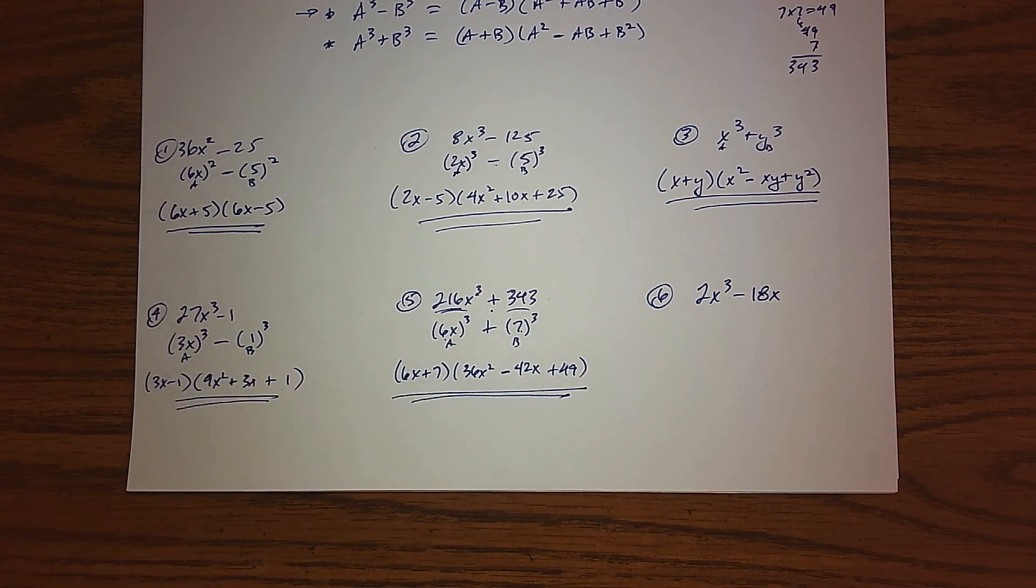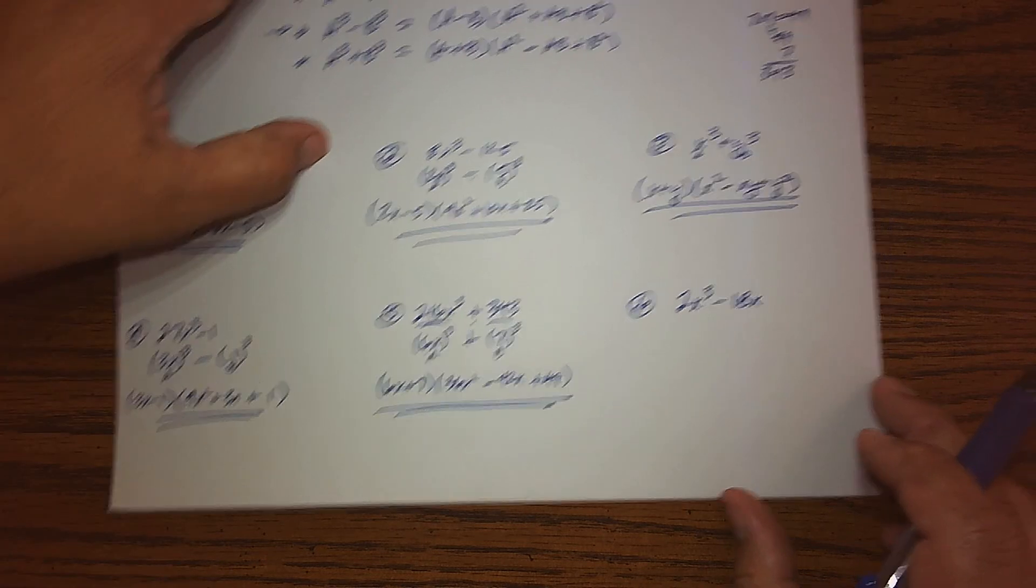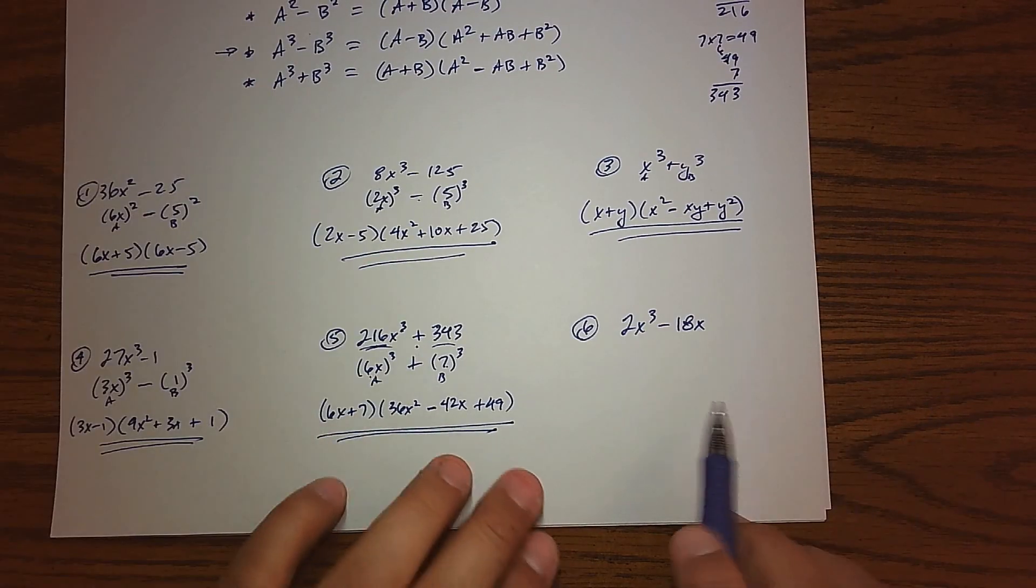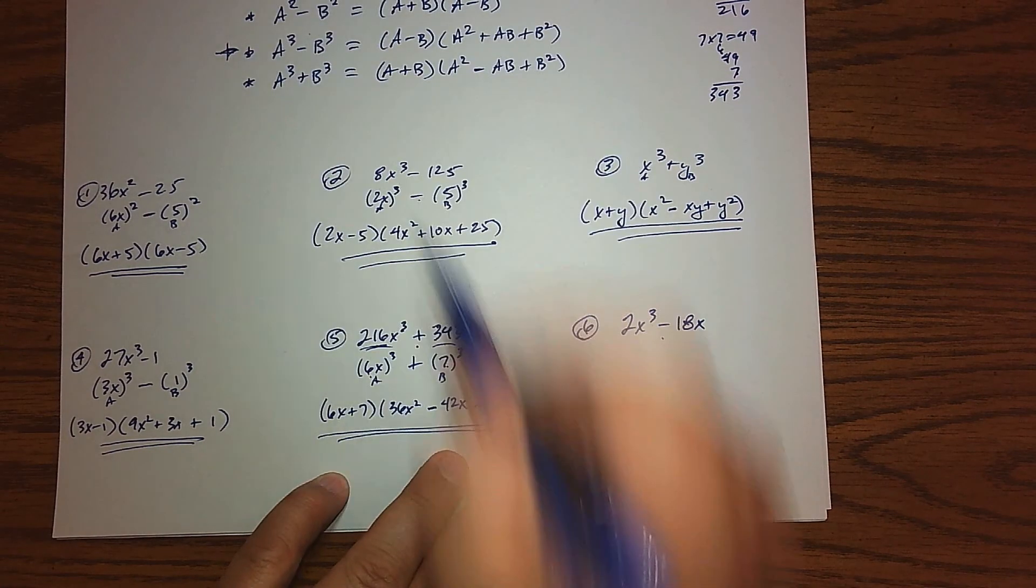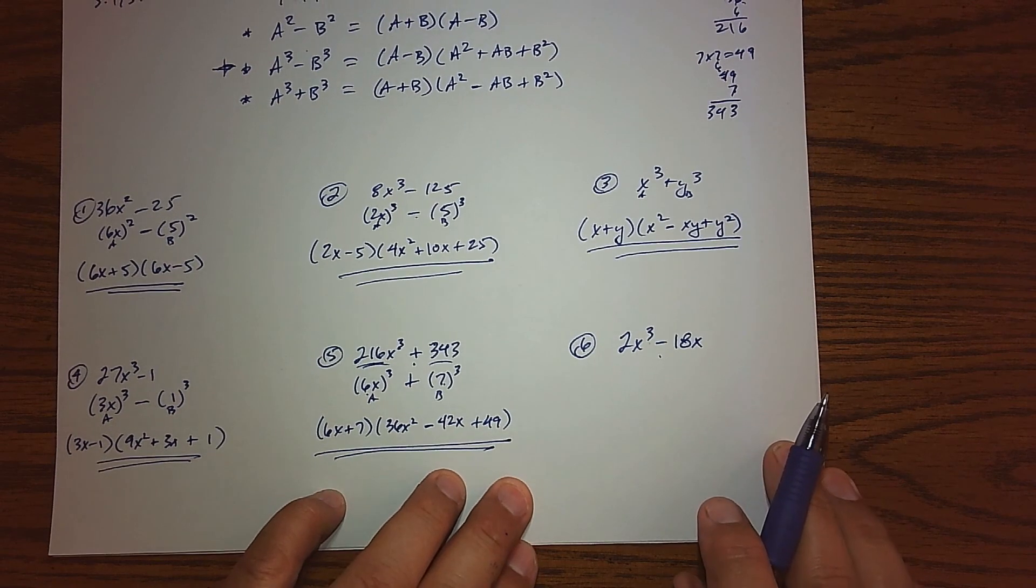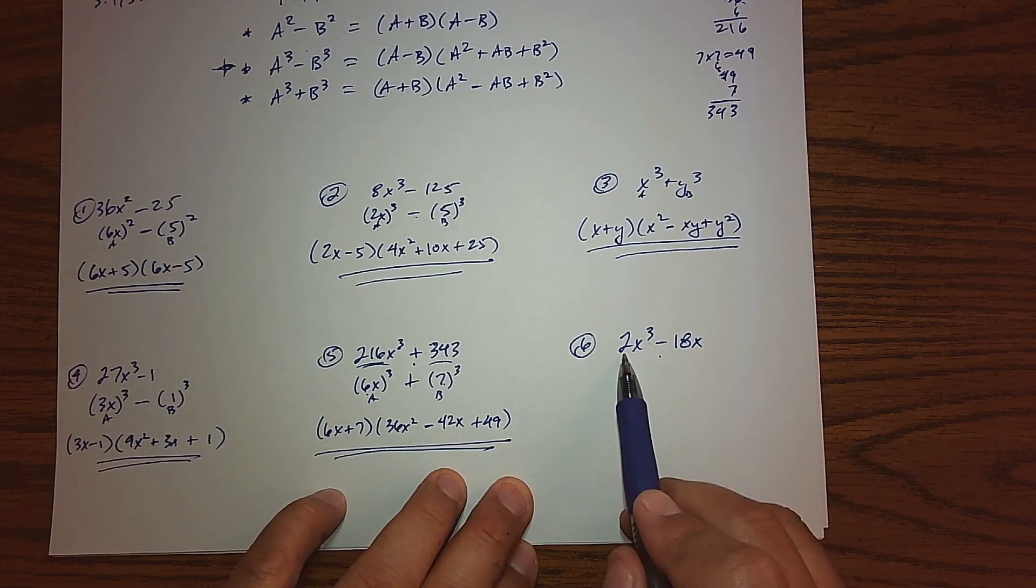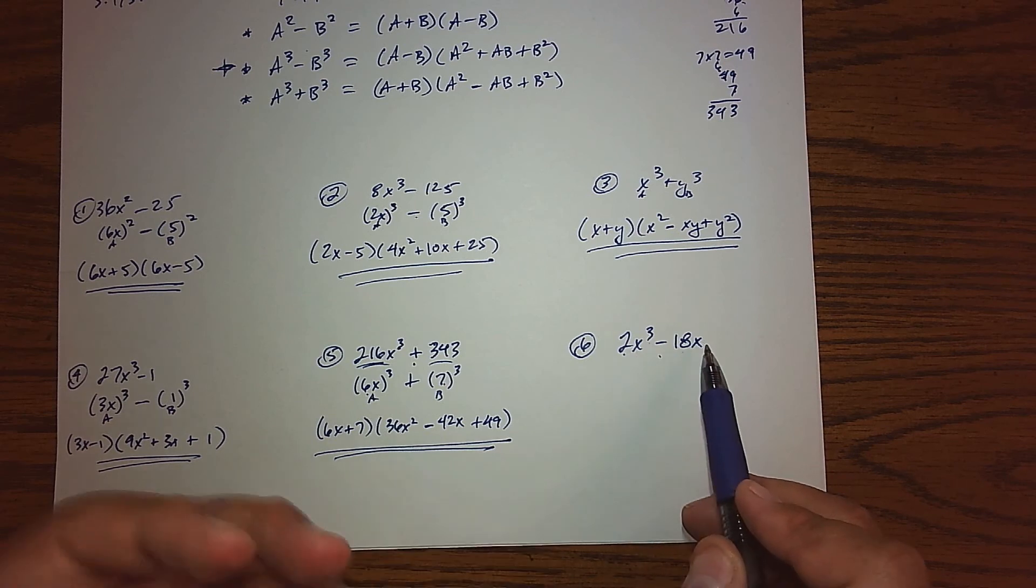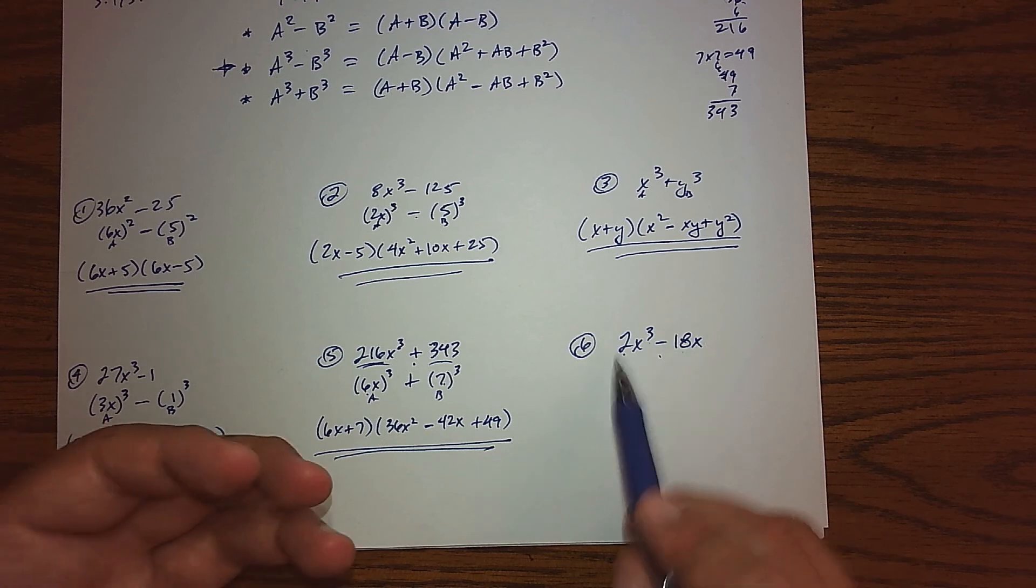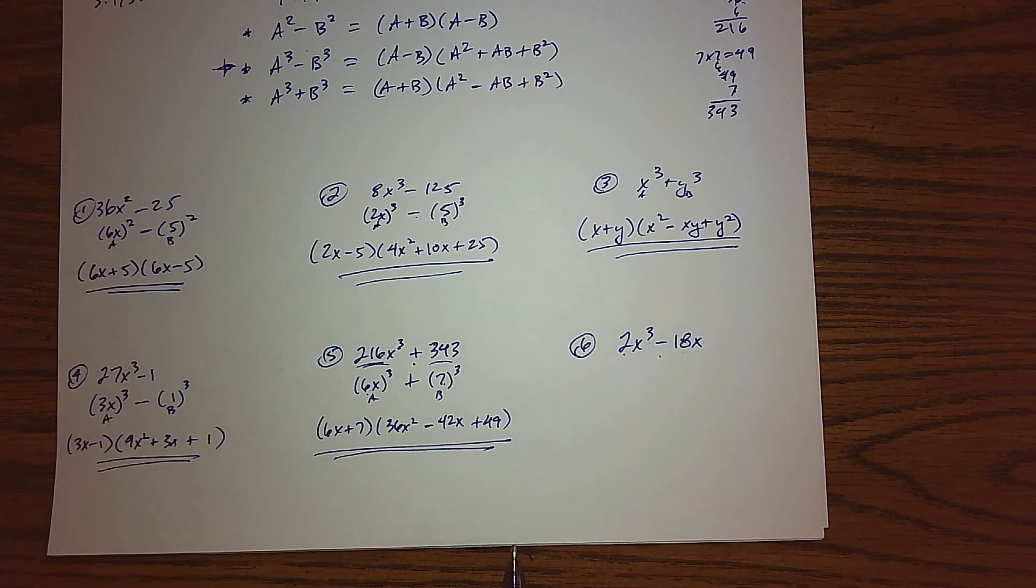So last one, when I initially look at this, I see a difference and I see a cube, so I'm kind of thinking preliminarily that this might be the difference of cubes. However, 2 is not a nice cube, and 18 is not a nice cube, and then this x over here is raised to the first power, so there are some things in here that kind of destroy it. However, don't panic—we just can't use our themes here.